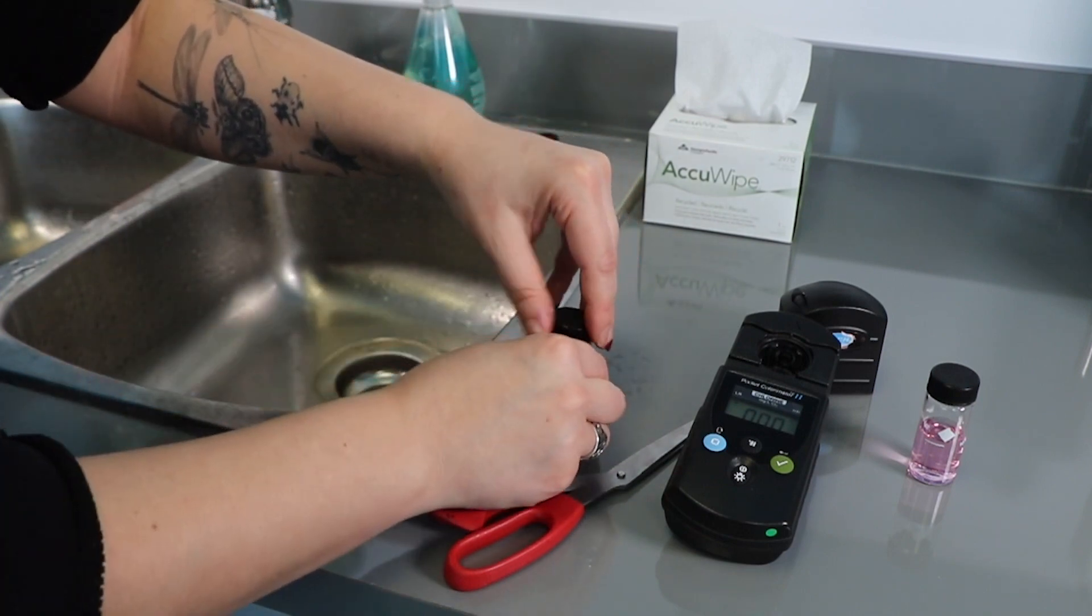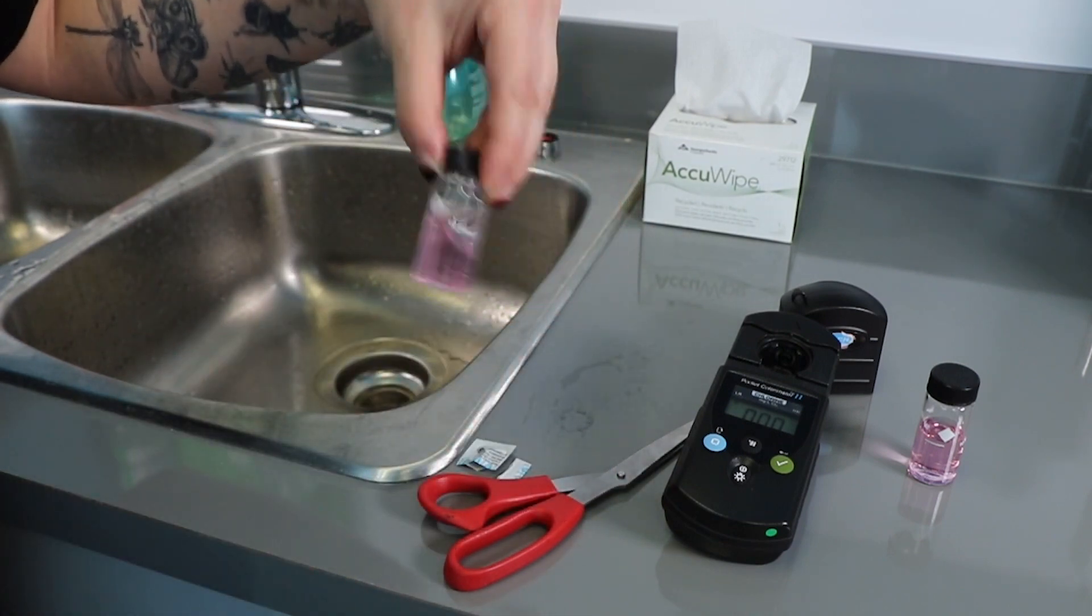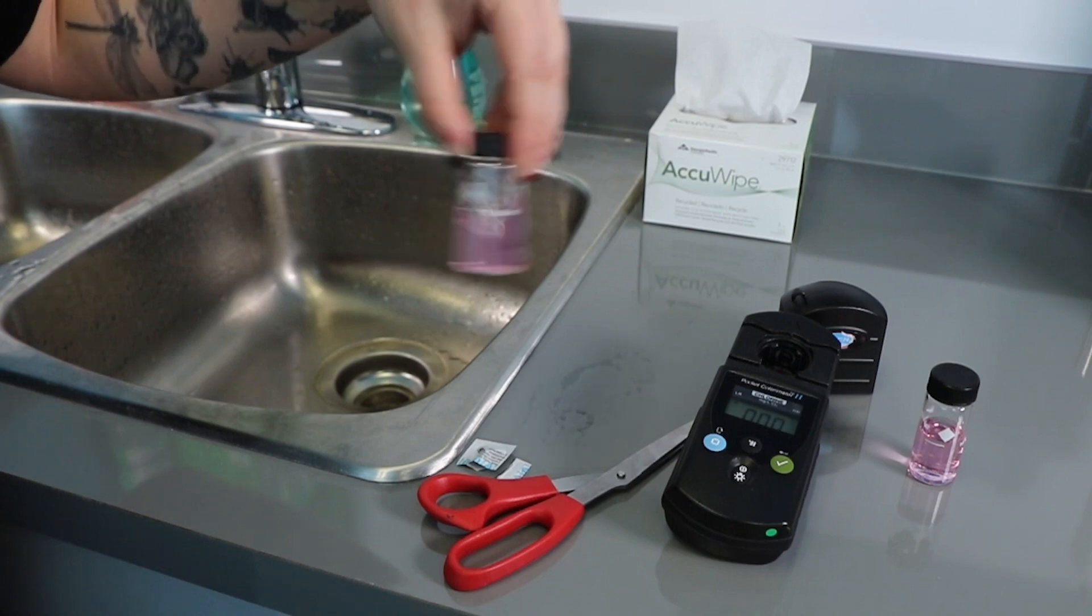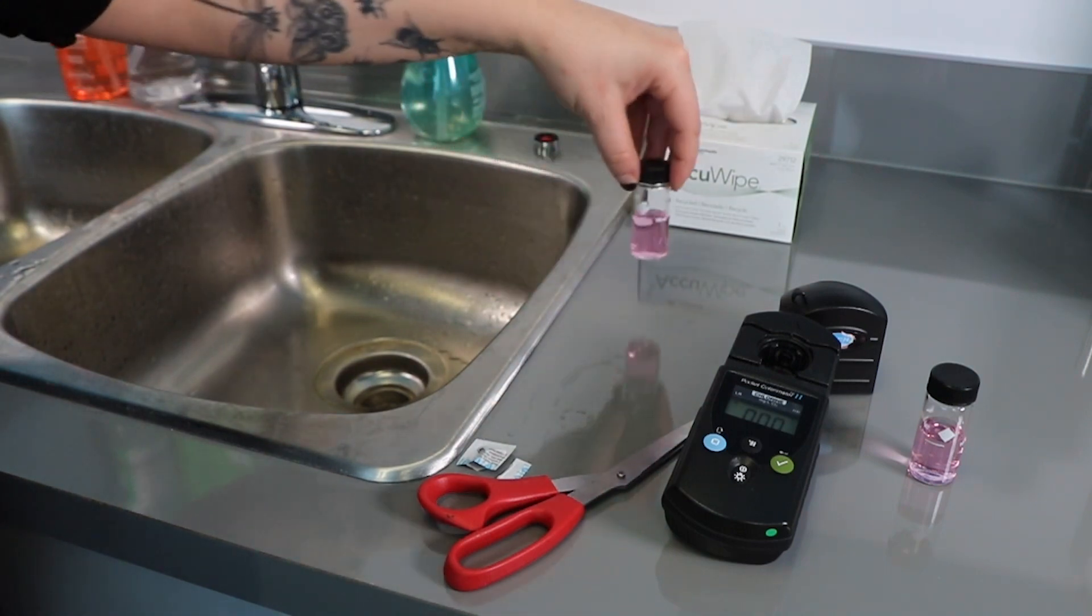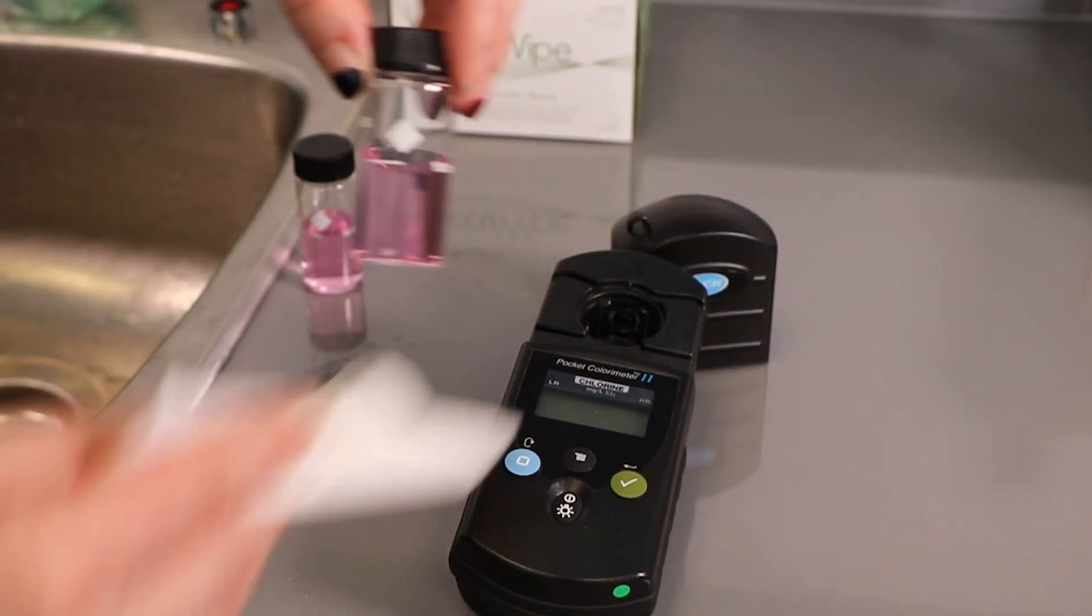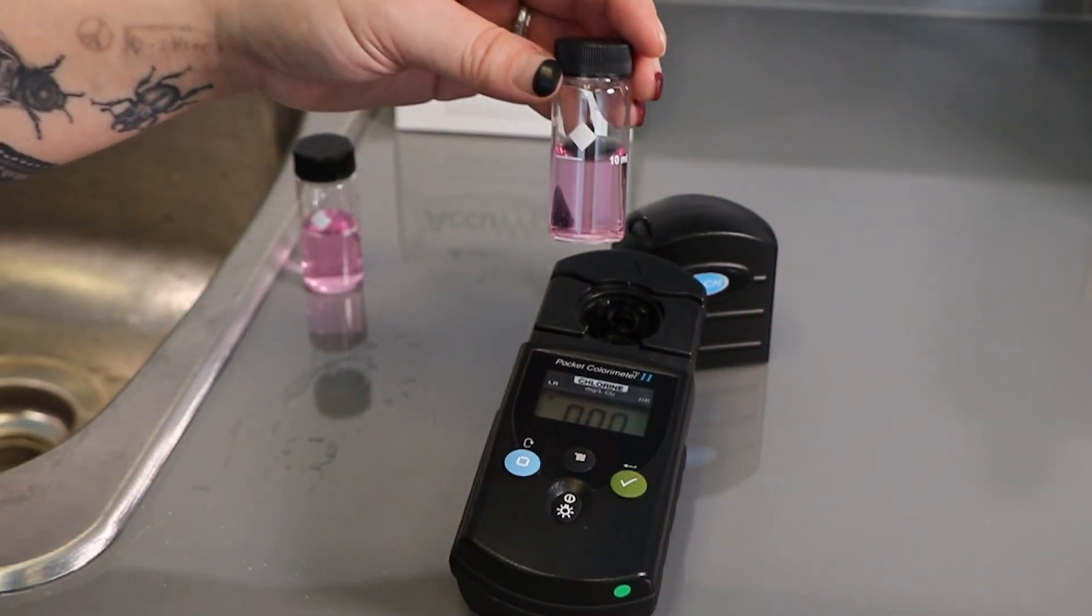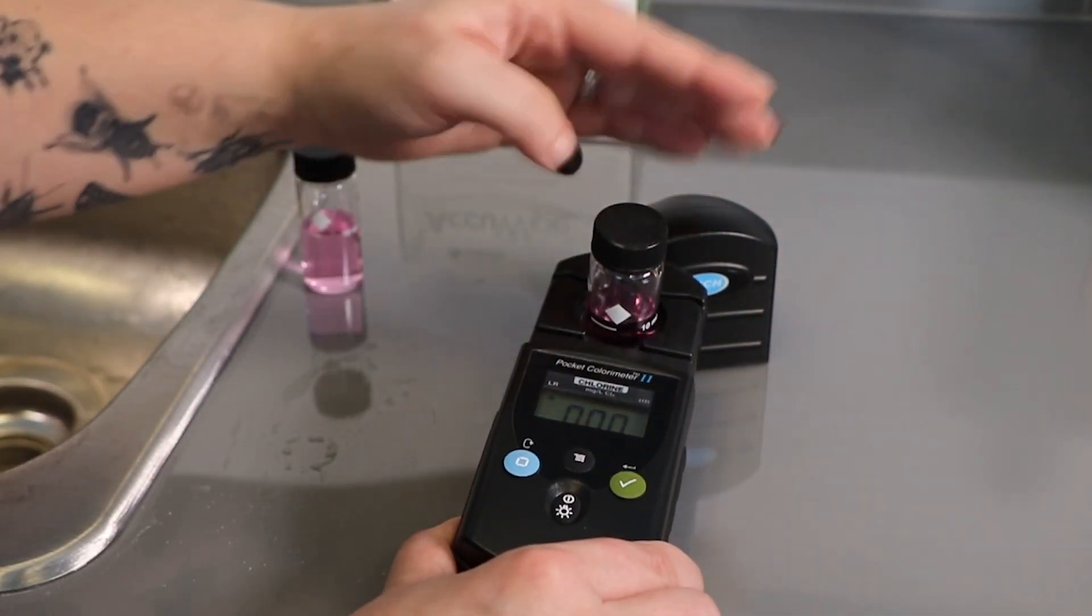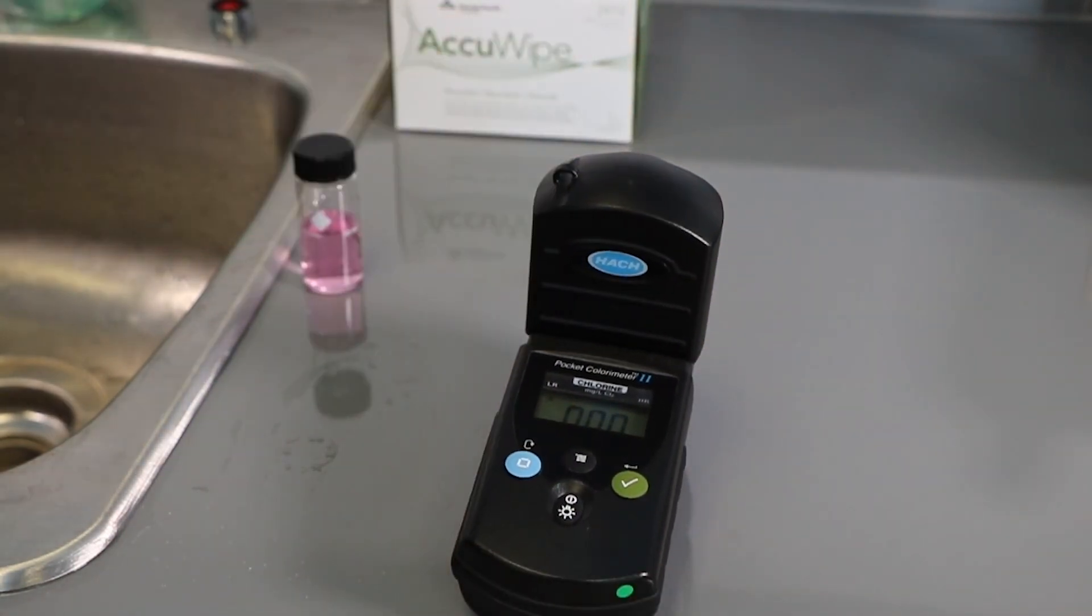Replace the cap and shake gently to dissolve the DPD reagent. Carefully dry the outside of the sample vial with a lint-free cloth, like an acuwipe, to remove any fingerprints and any traces of liquid. Place the prepared sample vial in the measuring chamber. Make sure the diamond-shaped marker is facing the screen and replace the instrument cover.